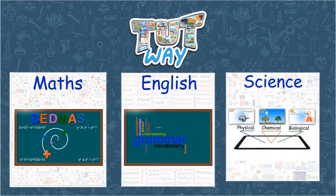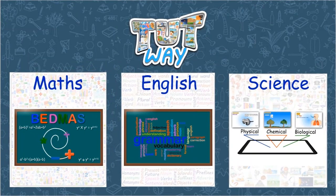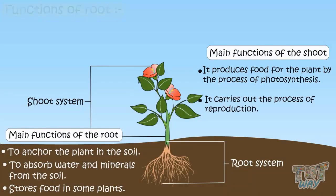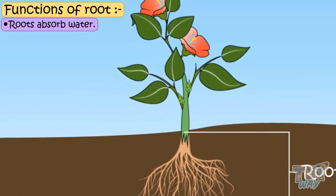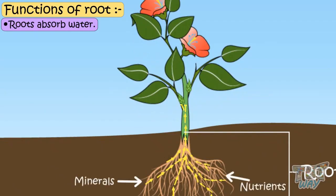Now let's learn the function of roots in detail. Roots absorb water from the soil, which in turn provides the plants with nutrients and minerals.